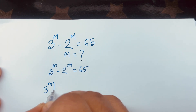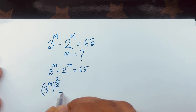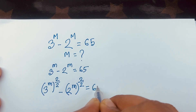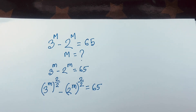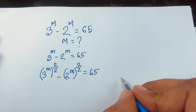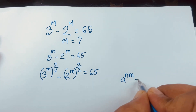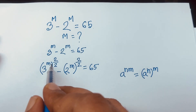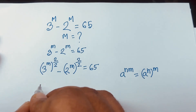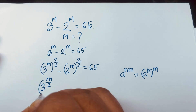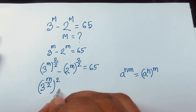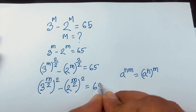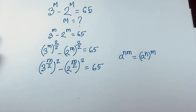To solve this question, I can rewrite it as: 3 to the power m, which is (3^(m/2))² minus 2 to the power m, which is (2^(m/2))², is equal to 65. According to exponential rules, a^(nm) = (a^n)^m, so I move the exponent inside the bracket.